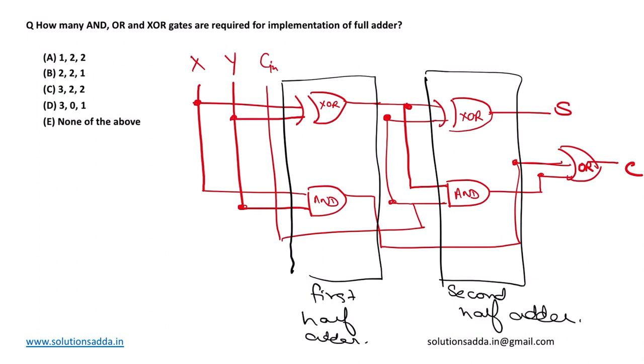So now we can see that two XOR gates are required, two AND gates are required, and one OR gate is required. So AND is required two, OR is required one, and XOR is required two. 2-1-2 is not in the options. Hence, option E is the correct answer for this question.